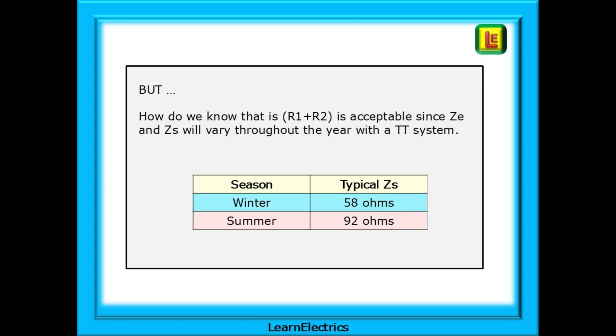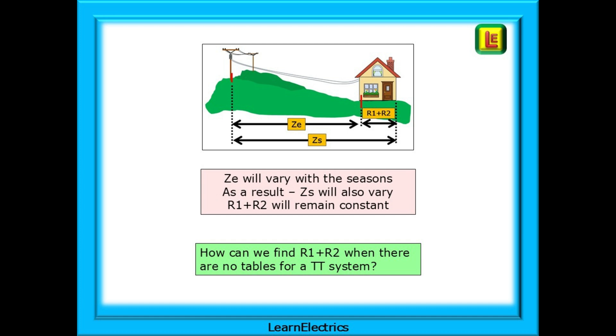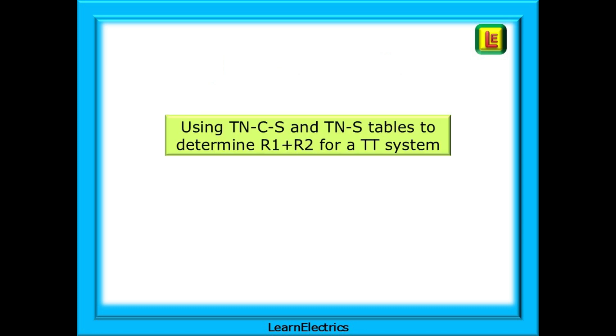We can measure R1 plus R2, but there are no tables for maximum ZS for different circuit breakers in TT systems. Typically, ZS values will be lower in the wet seasons of the year and higher in very dry seasons. It is the outside part that is changing. The inside wiring will remain as an almost constant resistance. So how can we find an acceptable R1 plus R2 when there are no tables for a TT system? We can use the TNCS and TNS tables in the books to determine a usable R1 plus R2 for a TT system.